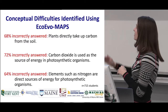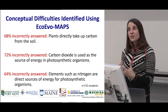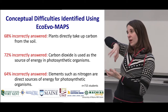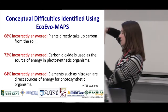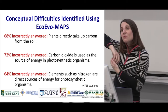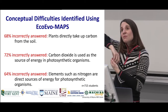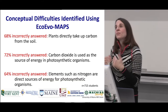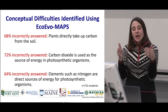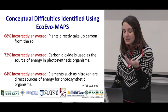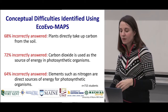When we gave this assessment across all institutions at the University of Maine, students were really struggling with energy and matter. Every statement shown here is incorrect: 68% of students incorrectly answered that plants directly take up carbon from the soil — people have this image of trees sucking up carbon from dirt instead of from CO2 in the atmosphere. 72% incorrectly said that carbon dioxide was providing the energy rather than the sun. That misunderstanding continued into thinking about nutrients — students were thinking fertilizers were directly providing energy for plants.